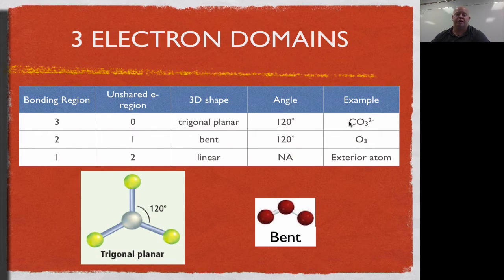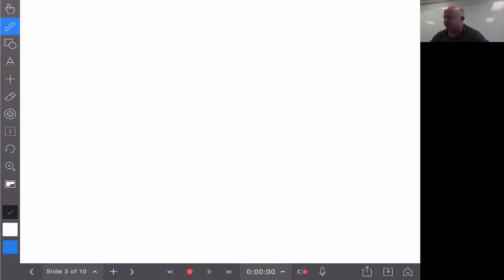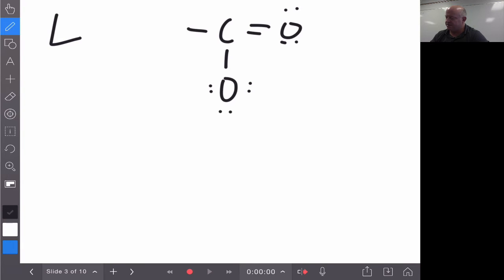When we move on to three electron domains, things get a bit more complex. We have three options: three bonding regions with zero unshared, two bonding regions with one unshared, or one bonding region with two unshared. Our example for the three-bonding-region case is carbonate (CO₃²⁻). Its Lewis structure shows carbon double-bonded to one oxygen and single-bonded to two others, with the whole thing bracketed as a 2-minus ion.